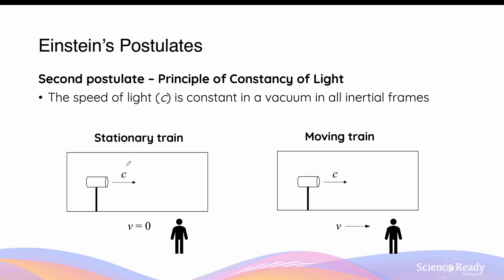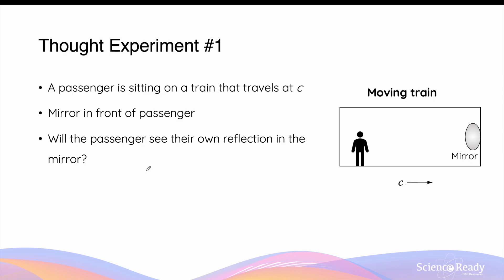So if the train was stationary, the speed of light is c as measured by the stationary observer outside the train. If the train is moving at velocity v, the speed of light is also measured to be c by a stationary observer outside the train.